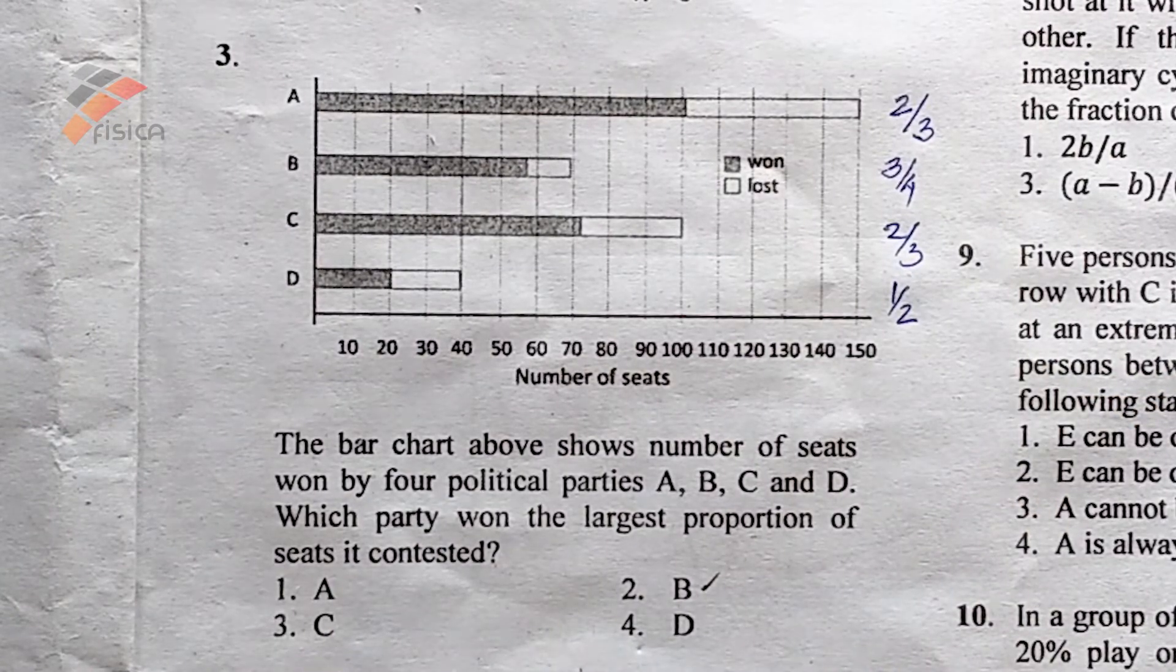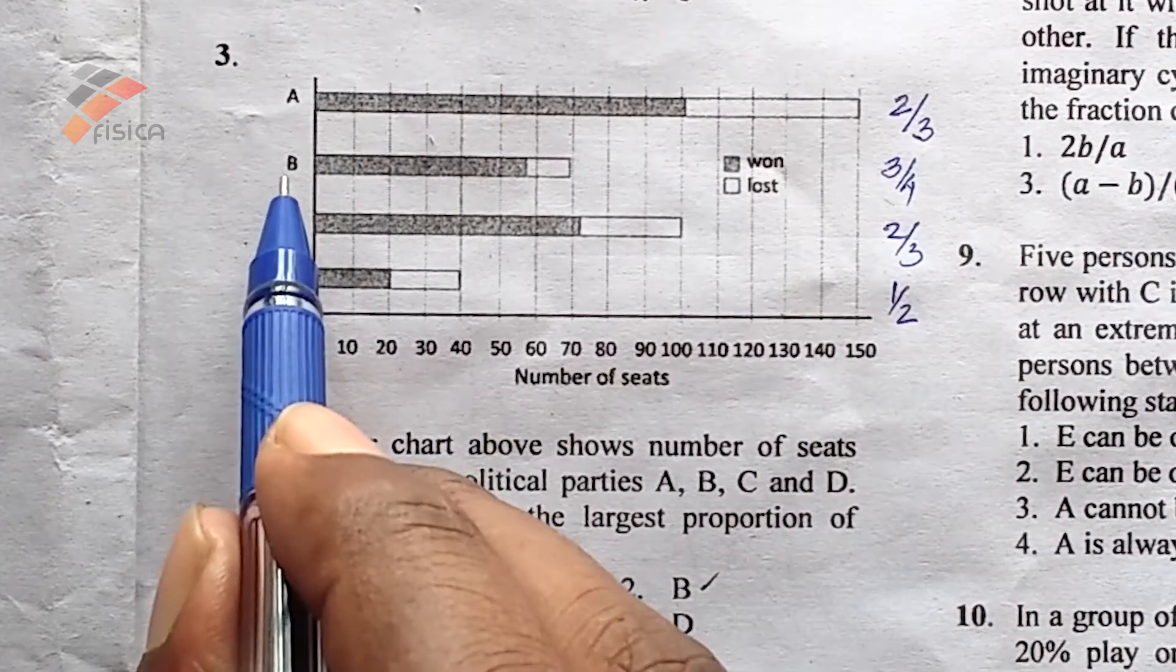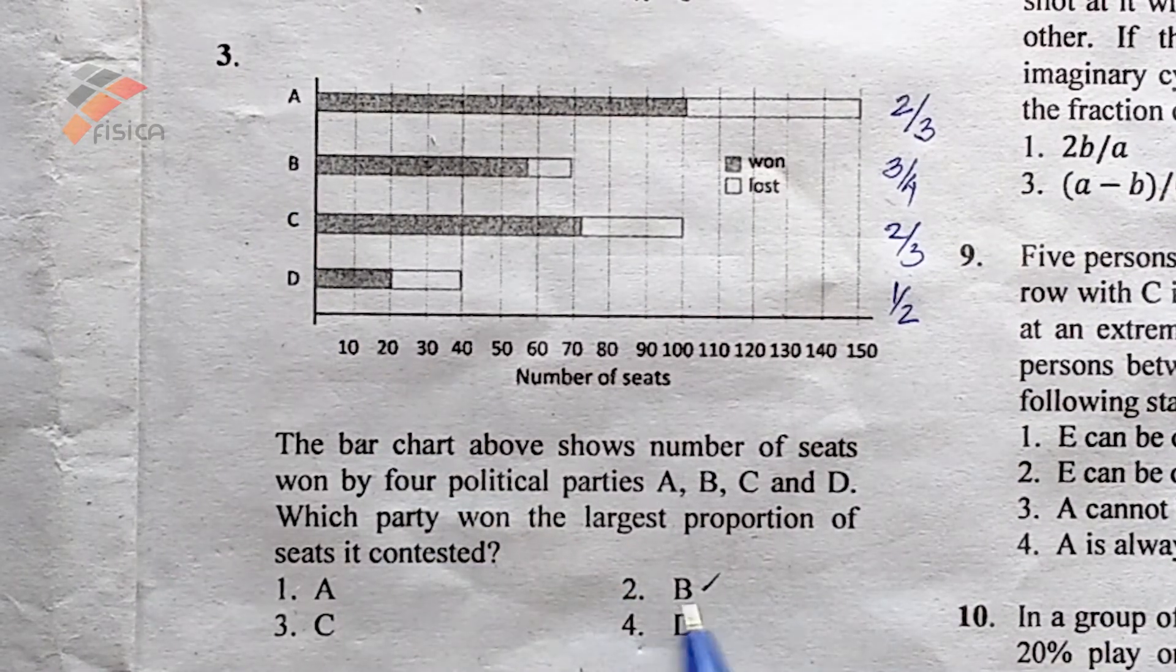So the largest proportion is three-fourths. So the answer is option two, that is B.